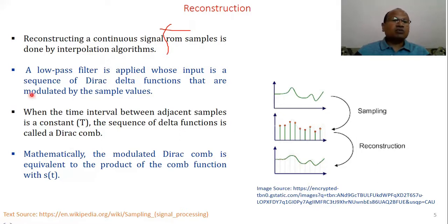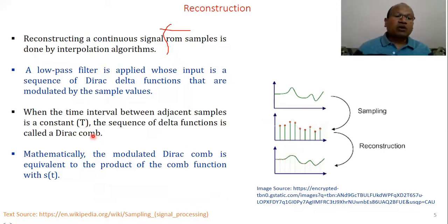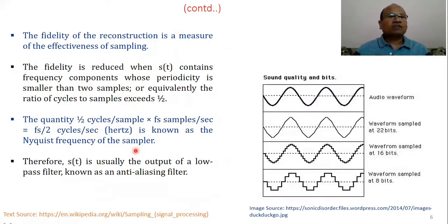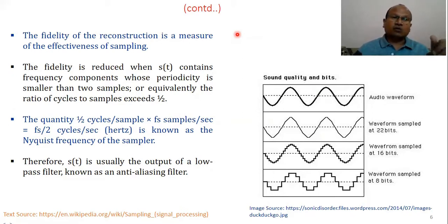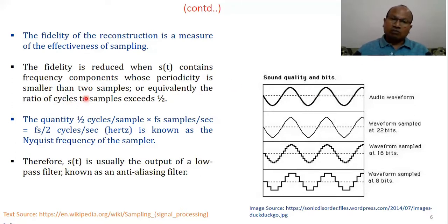A low-pass filter is generally applied whose input is a sequence of Dirac delta functions modulated by sample values. When the time interval between adjacent samples is constant, the sequence of delta functions is called a Dirac comb. Mathematically, the modulated Dirac comb is equivalent to the product of the comb function with s(t). The fidelity of reconstruction is reduced when the signal contains frequency components whose periodicity is smaller than two samples — equivalently, when the ratio of cycles to sample exceeds 1/2.